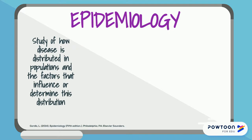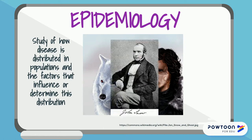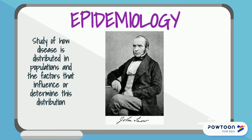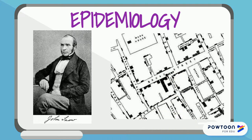The founding father of epi was Jon Snow. In the 19th century, during a cholera outbreak in London, Snow went door to door collecting information on cholera deaths and where each house got their water. After analyzing the data, he noticed a clustering around the Broad Street pump. After removing the Broad Street pump handle, the cases subsided.